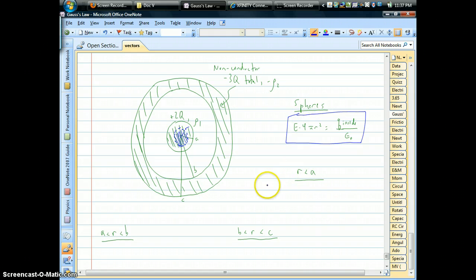Electric field times the area of our Gaussian surface, which would be 4π little r squared, and it's always the left-hand side, is equal to the charge inside that region over epsilon. So our job is almost always to figure out what to plug in for charge.